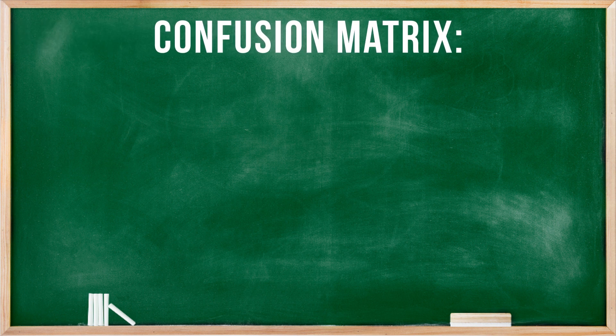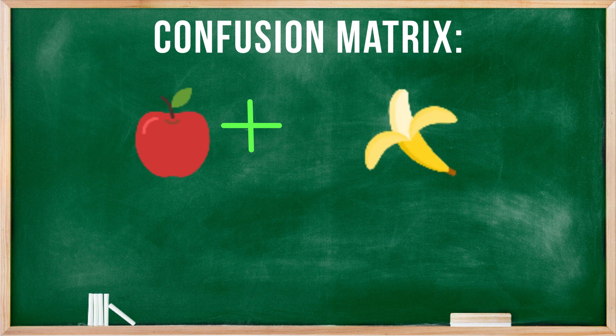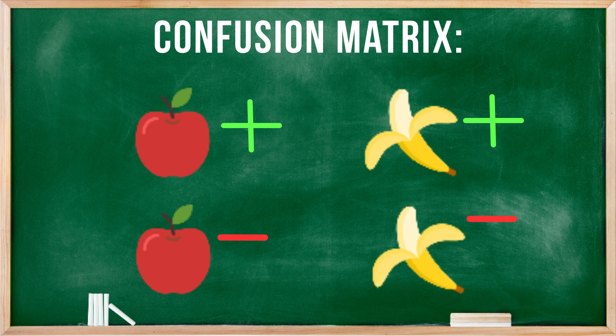Essentially, the confusion matrix is just keeping track of class A correctly predicted as class A, class B correctly predicted as class B, class A incorrectly predicted as class B, and class B incorrectly predicted as class A.